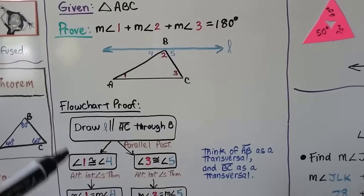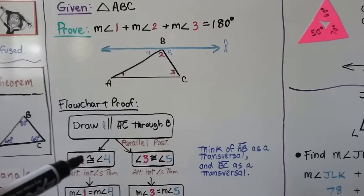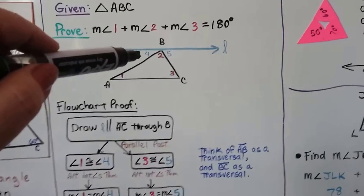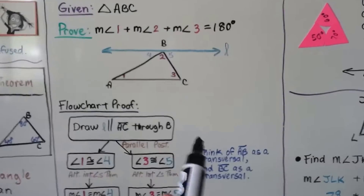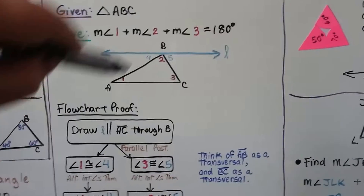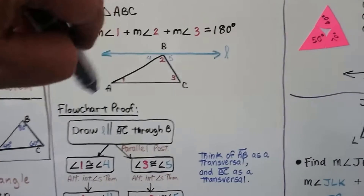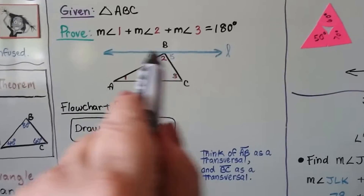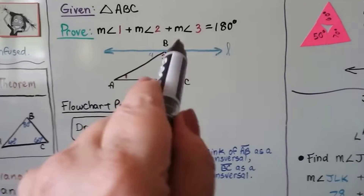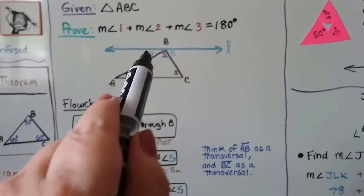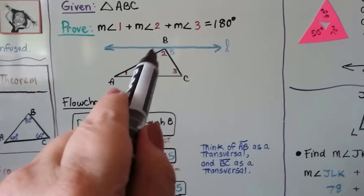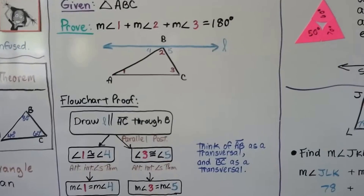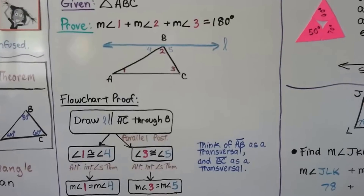Angle 1 is congruent to angle 4, because if we think of segment AB as a transversal — with one parallel line here and another parallel line here — then angles 1 and 4 are alternate interior angles. That's the Alternate Interior Angles Theorem, so they're congruent.